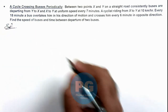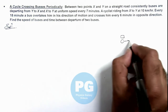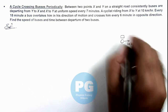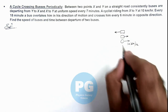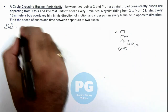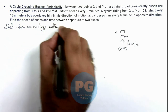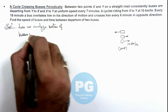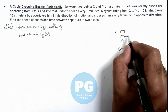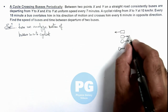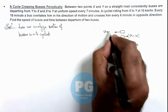In this situation, if the cyclist is moving at a speed of 10 kilometers per hour, one bus is moving in the direction of the cyclist and another bus is moving in the opposite direction. If we consider the cyclist to be at rest, we can analyze the motion of buses with respect to the cyclist. Relative to the cyclist, the bus moving in the same direction has speed v minus 10, and the bus moving in the opposite direction has speed v plus 10.